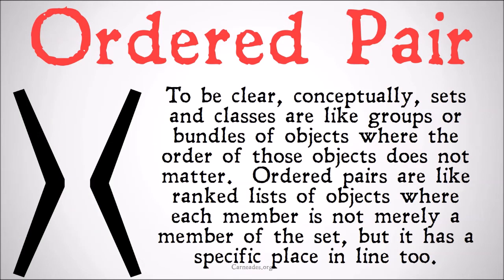To be clear, conceptually sets and classes are like groups or bundles of objects, where the order of those objects does not matter. Ordered pairs are like ranked lists of objects, where each member is not merely a member of the set, but has a specific place in line too.